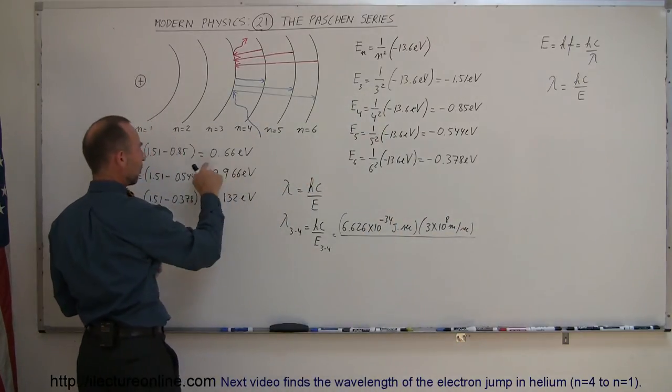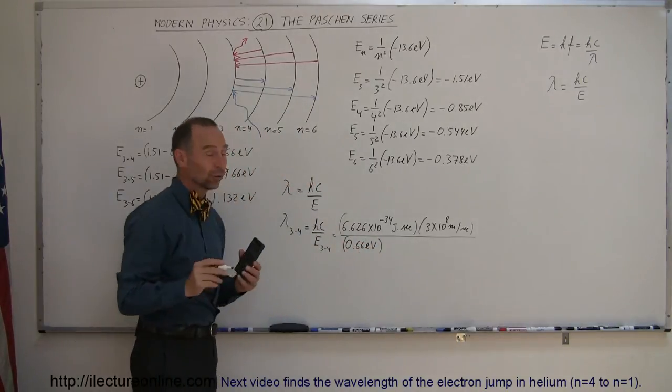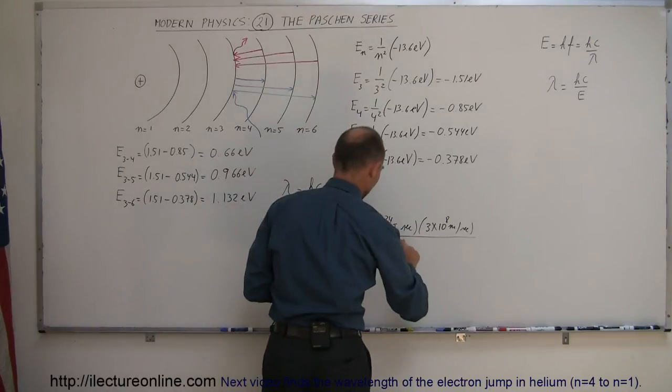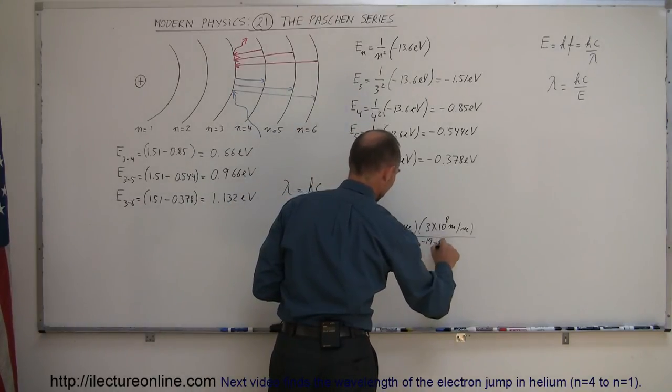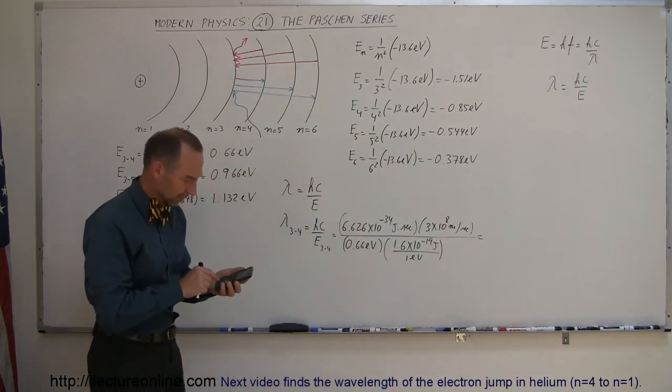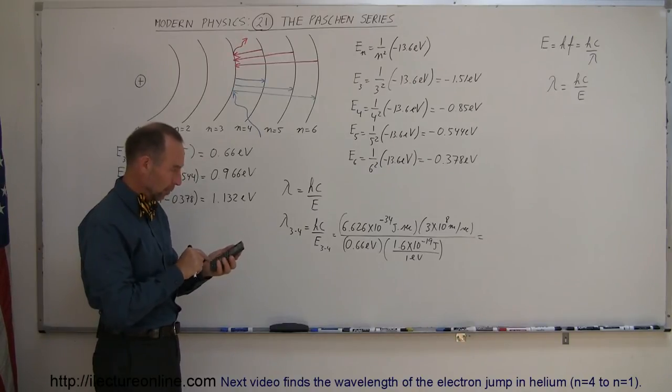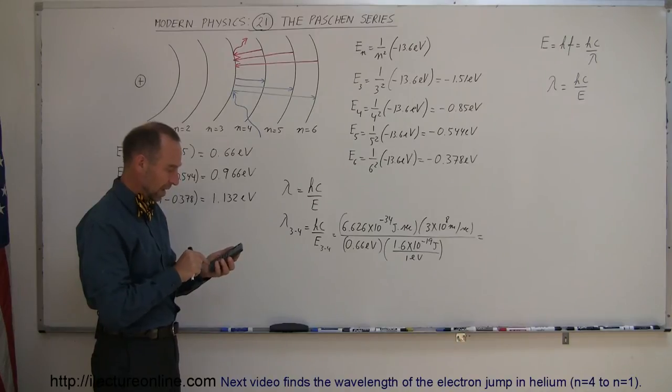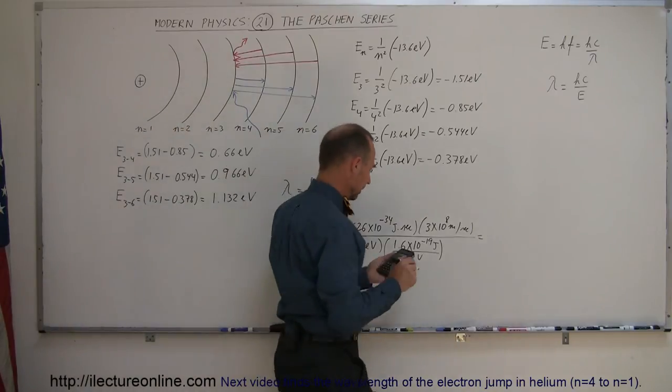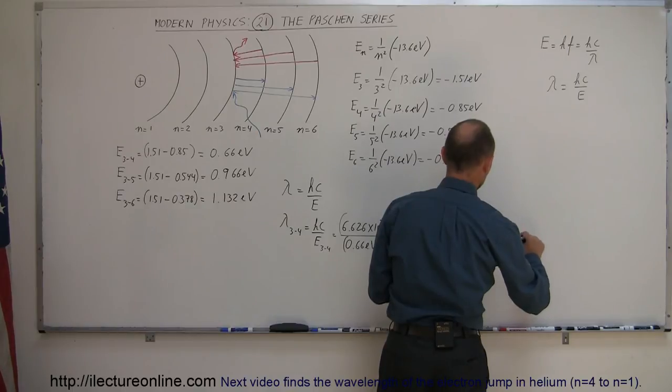The energy difference for that jump was 0.66 electron volts. And of course, we have to convert that to joules, otherwise we don't get the right numbers. So 1.6 times 10 to the minus 19 joules per one electron volt. Let's see what we get. 6.626e-34 times 3e8 divided by 0.66, and then divided by 1.6e-19, and I get 1,882 nanometers.